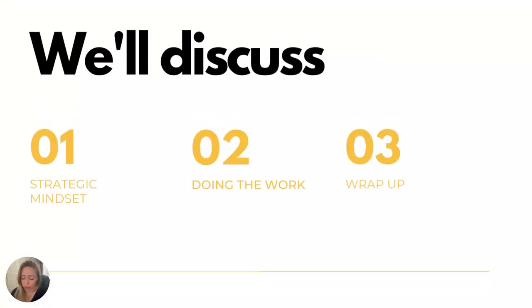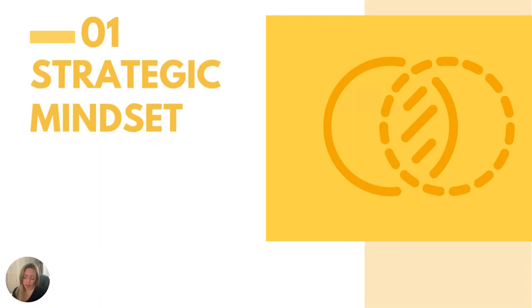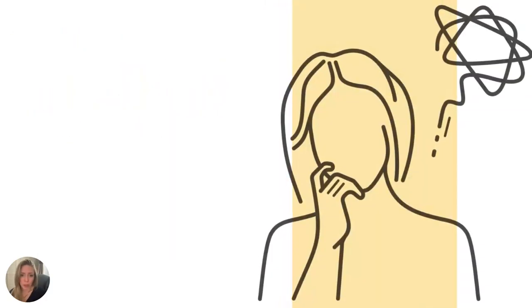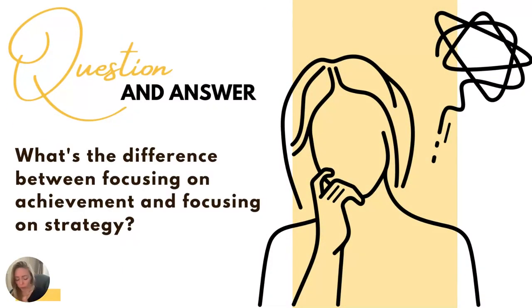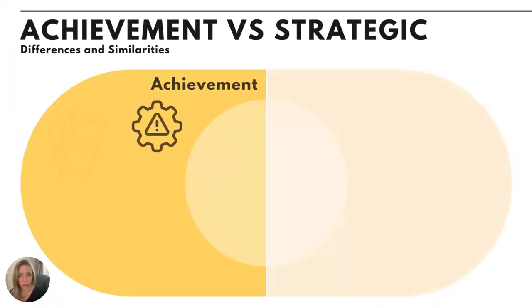Today we're going to talk about the shift between the achievement mindset and the strategic mindset. We'll work together on how to build consensus, communication, writing good OKRs, what a bad OKR looks like so you can recognize it, and we'll wrap up with all those checklists. Let's get started with the strategic mindset. It might seem like a funny place to start talking about objectives and key results, but if you use it with an achievement focus, you will fail.